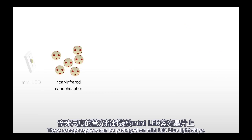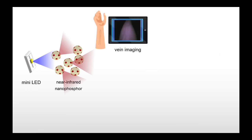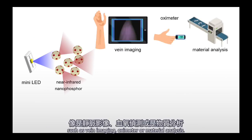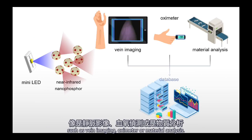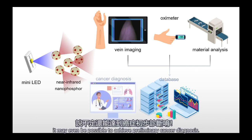These nanophosphors can be packaged on mini-LED blue light chips, and their near-infrared light can be used as a sensor for various applications, such as vein imaging, oximeter, or material analysis. With the aid of artificial intelligence or big data, it may even be possible to achieve preliminary cancer diagnosis.